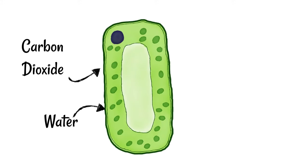Carbon dioxide and water enter the cell and then through photosynthesis glucose and oxygen are generated.